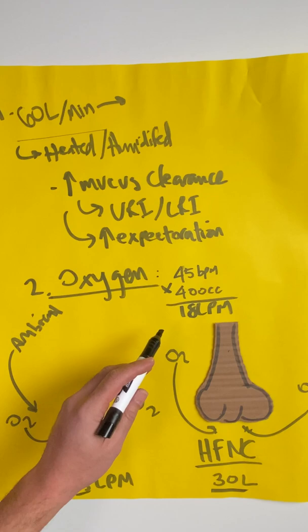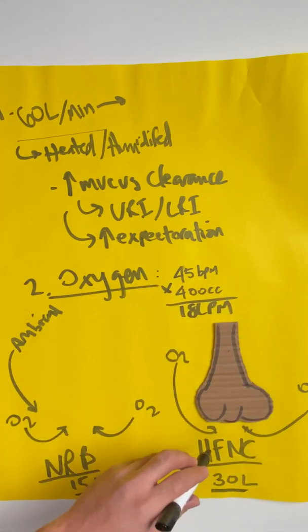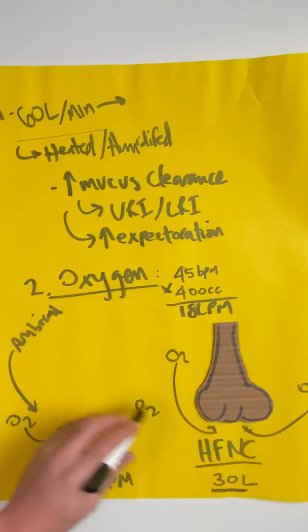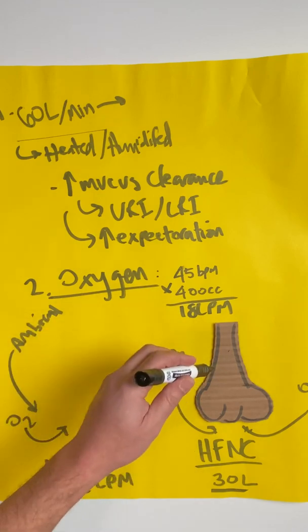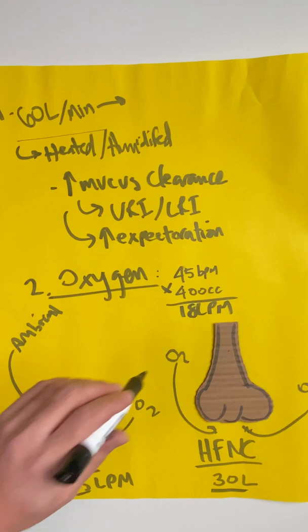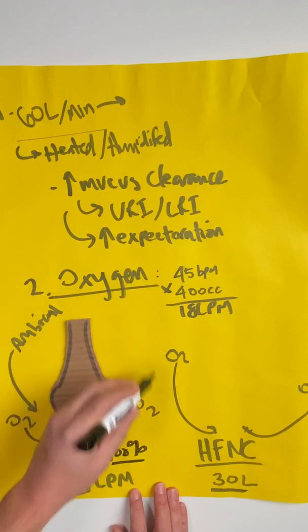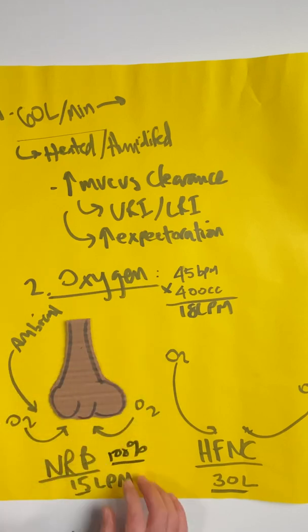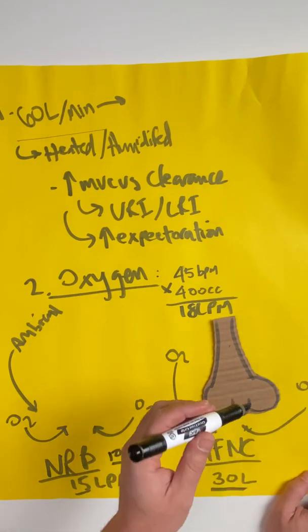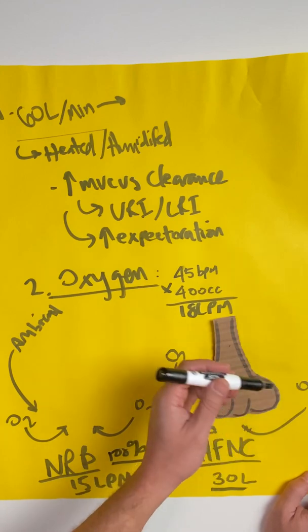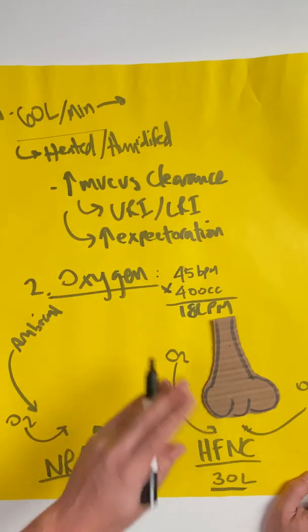What high flow does is it meets the patient's minute ventilation better because it has higher flows and you get less entrainment or less room air oxygen getting pulled and diluting down the FiO2. So the FiO2 that you dial in on the high flow machine is much closer to the FiO2 that the patient is getting. In this example, you would think that the person's getting 100% FiO2, but because the room air is getting diluted down, they're probably getting a lot less than that. With high flow, if you dial in 100%, you can be sure that your patient's getting 100%.